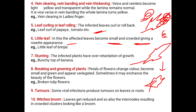Next comes stunting. The infected plants have severe retardation of growth — the growth is minimized. The best example is bunchy top of banana, where the normal size of the banana plant is reduced to a very small height due to stunting.